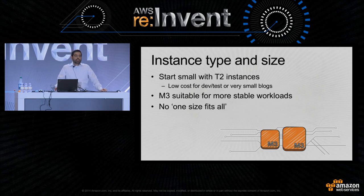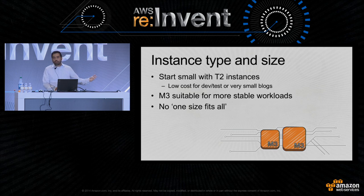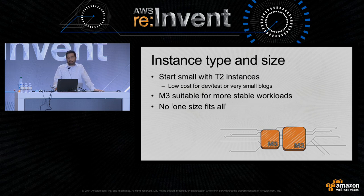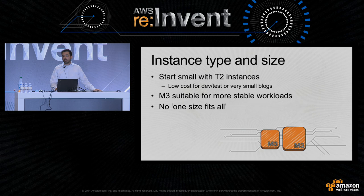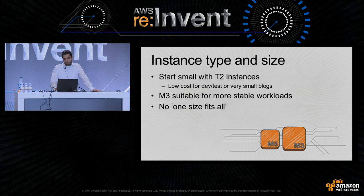The initial decision I had to take was what kind of instance type to use. For such a low-traffic website, I went with the T2 instance — T2 instances are very cost-efficient for such a workload. If you're doing anything more substantial, an M3 instance is probably more suitable for a stable workload with more capacity. Your case might differ depending on the complexity of the plugins you have installed and the size of your database.